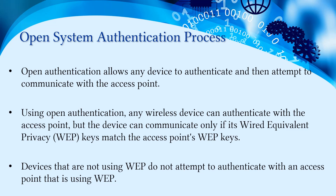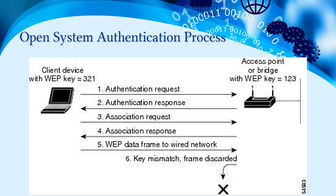Using open authentication, any wireless device can authenticate with the access point, but the device can communicate only if its Wired Equivalent Privacy (WEP) key matches. The access point verifies the WEP keys — once the WEP key matches, it allows the device to access the network. Devices that are not using WEP do not attempt to authenticate with access points that are using WEP.